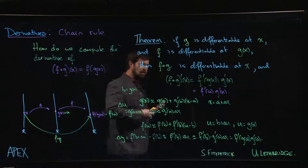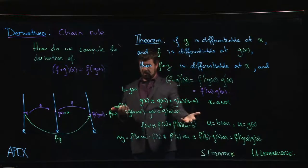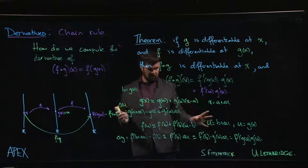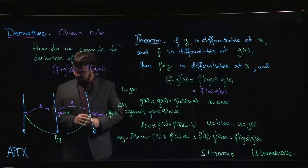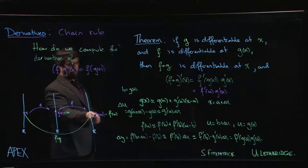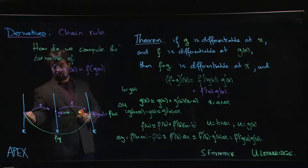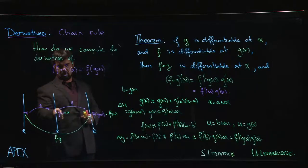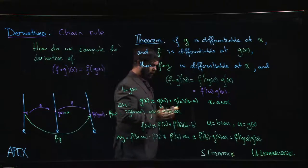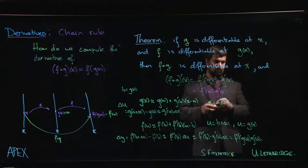We could get into a proof using the definition of the limit, but that proof is actually a little bit trickier than you might think, and this more or less illustrates the idea. The conceptual understanding is important: a small change in x produces a change in u, that change in u produces a change in y = f(x), and if we want to know how the change in y depended on the original change in x, we multiply the two rates together to get the overall result.